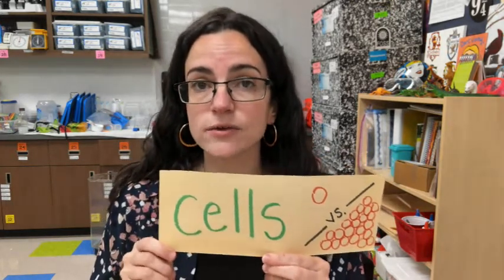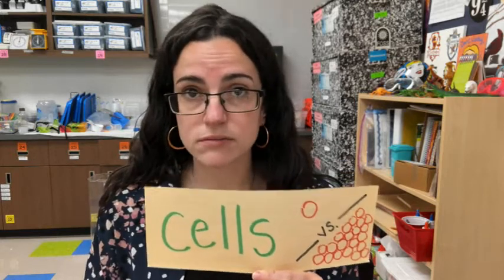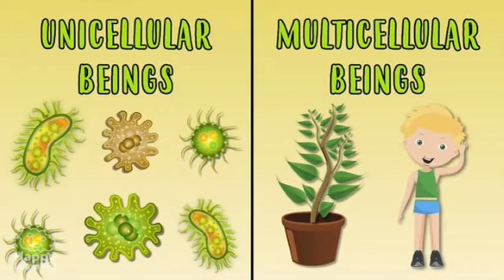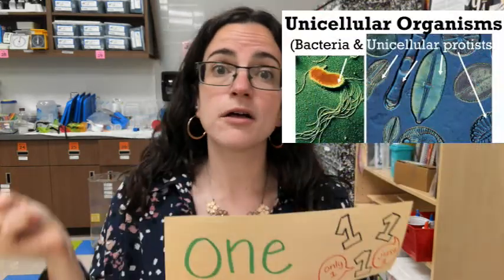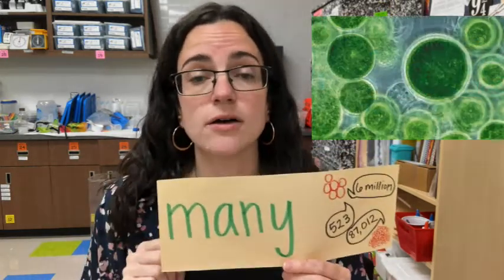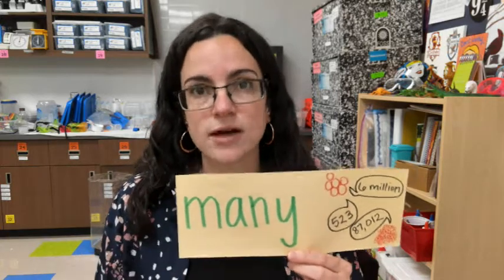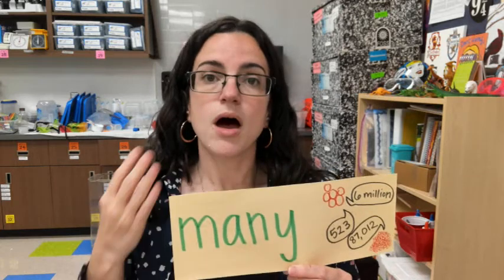Another question to think about when talking about cell structure is how many cells can be found in the body of that living organism. There are two ways to describe it: unicellular and multicellular. Unicellular means there is only going to be one cell. Multicellular means there are many, many cells — maybe five, maybe five million, maybe 500,000. It just depends on the makeup of that particular living organism.